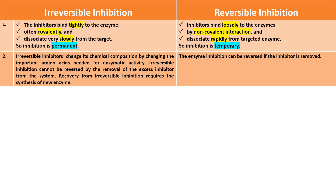Irreversible inhibitors change the enzyme's chemical composition by changing the important amino acids needed for enzymatic activity. Irreversible inhibition cannot be reversed by the removal of excess inhibitor from the system. Recovery from irreversible inhibition requires the synthesis of new enzyme.